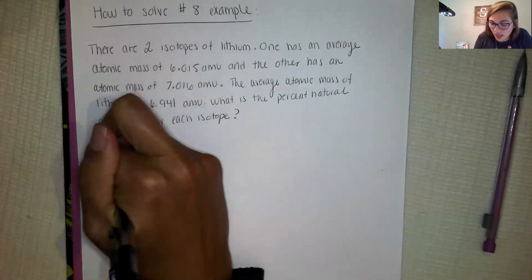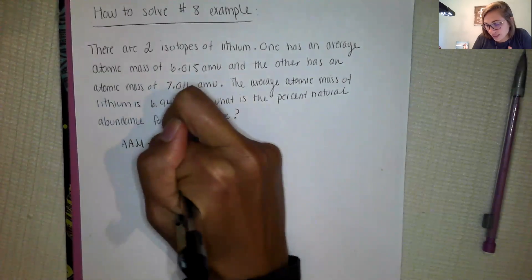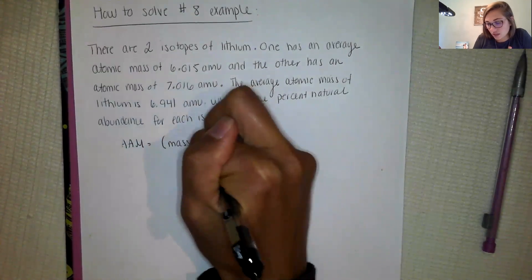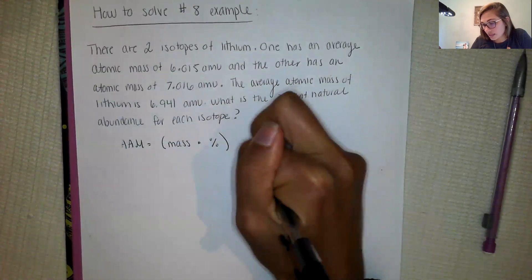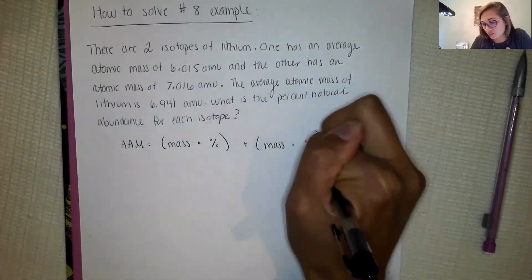So we know that the average atomic mass is equal to the mass of our first isotope times the percentage and then plus the mass of the second isotope times the percentage.